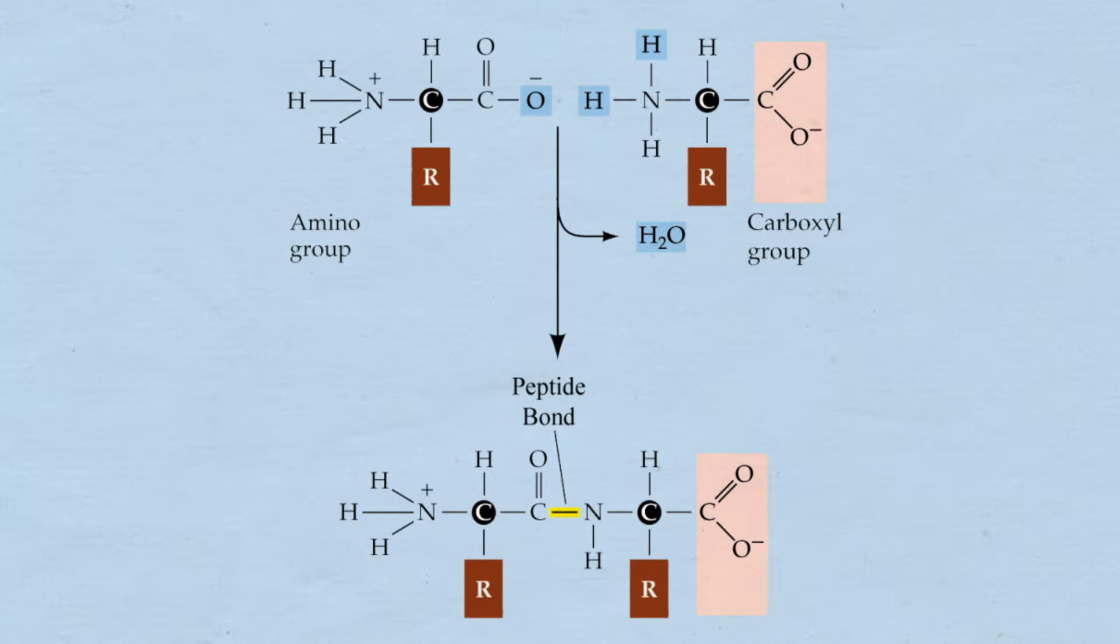This bond is formed between the carbon of the carboxyl group and the nitrogen of the amino group. This forms a covalent bond between the two amino acids but we always call a bond between amino acids a peptide bond.